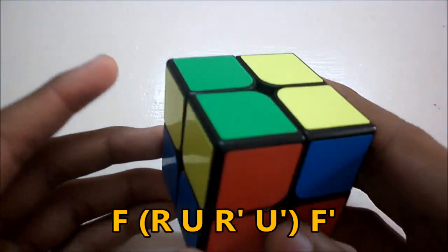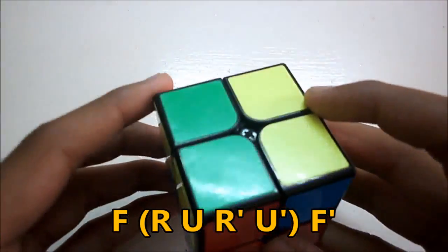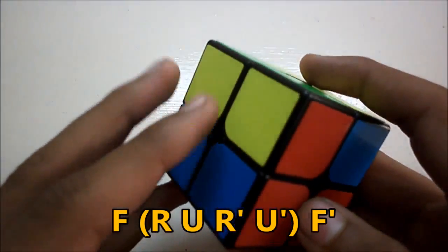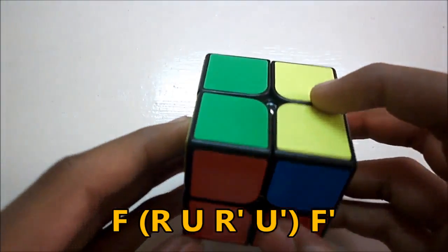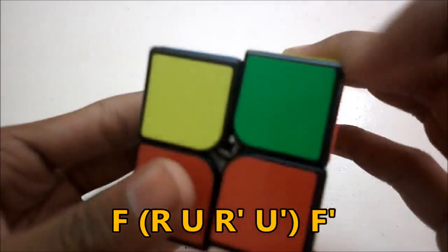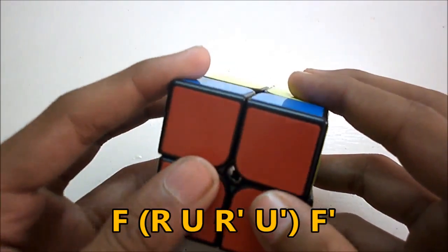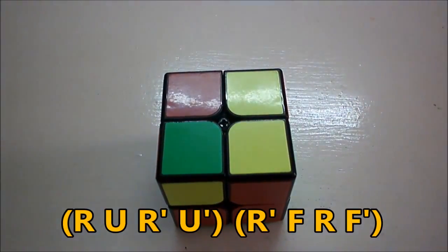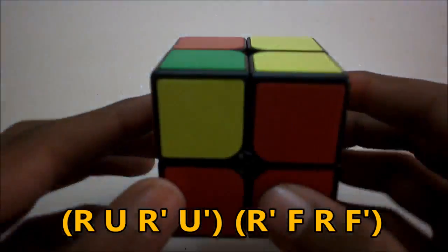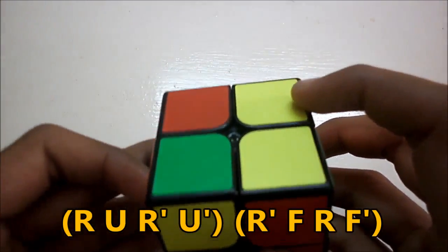So the next case is when you have two sets of headlights, one facing up and the other one facing left. Holding the cube like this you perform the algorithm F sexy move which is R U R' U' and then an F' and that solves it.